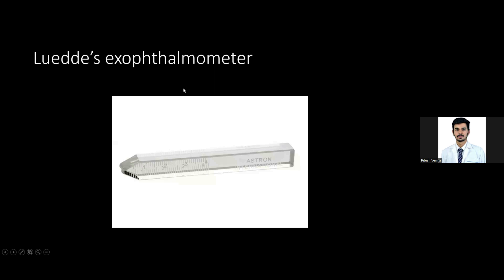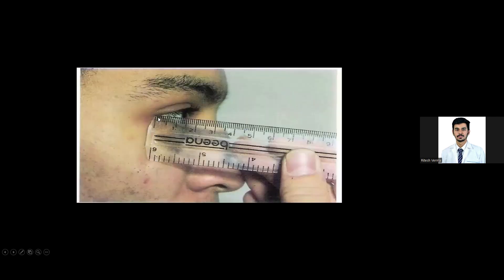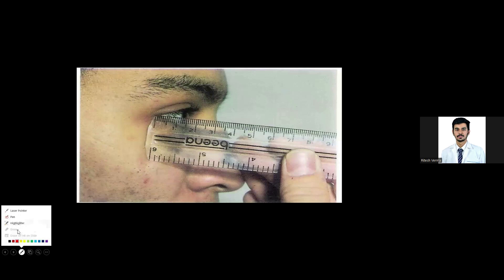The Lourdes exophthalmometer is one you may be asked to use in the exam because it does not require a lot of manipulation. This triangular edge goes to the lateral orbital margin. You place a scale at the lateral orbital rim and hold the ruler so that it bisects the cornea at its center — that is your reading. A difference of more than 2mm between both eyes indicates proptosis.